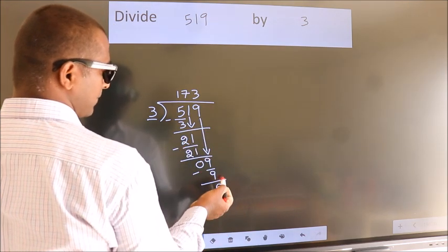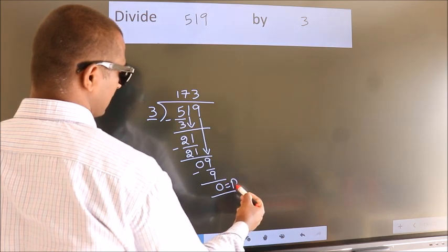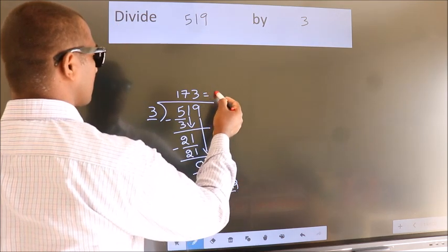No more numbers to bring it down. So, we stop here. This is our remainder. This is our quotient.